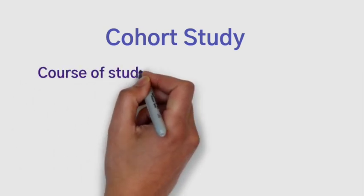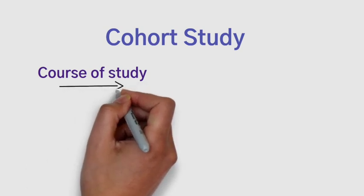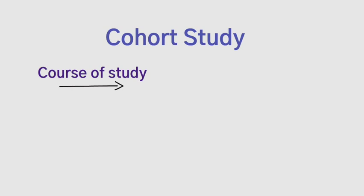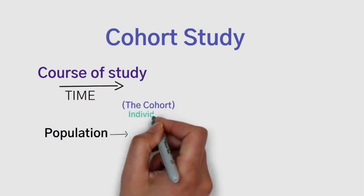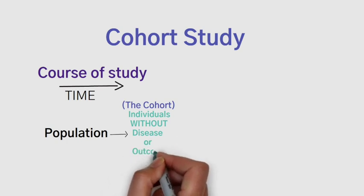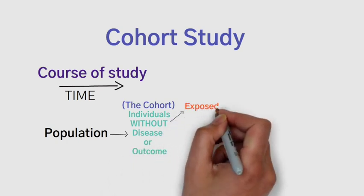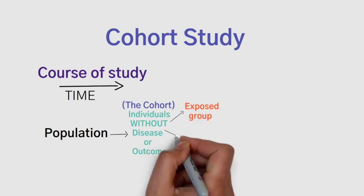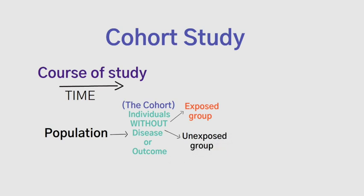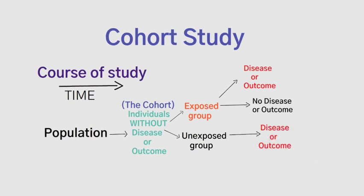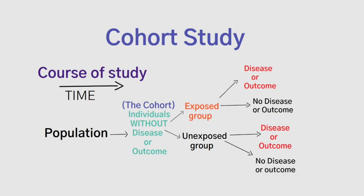The basic understanding of the cohort study: first, the course of a study can be forward or prospective, and it can also be backward, called historical or retrospective, with respect to time. From the population, you identify the cohort, which are people or individuals who share some common attribute and are without the disease or outcome. Then you group the cohort according to their exposure status, classified as exposed and unexposed groups. Finally, you follow the cohort members to see the appearance of an outcome or disease and relate this with the exposure of interest.